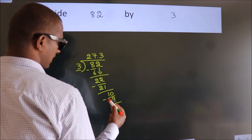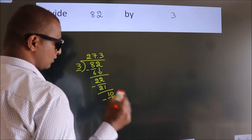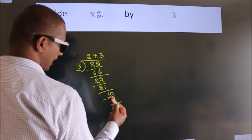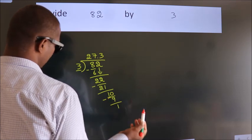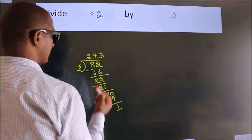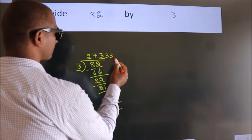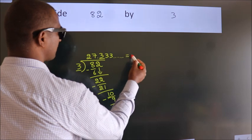Now we subtract, we get 1. Now you observe, we had 1 here and we got 1 again. That means this number keeps repeating. So this is our quotient.